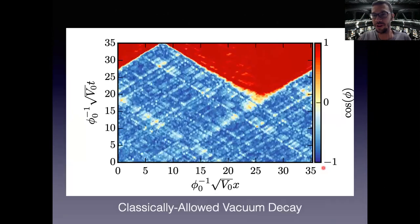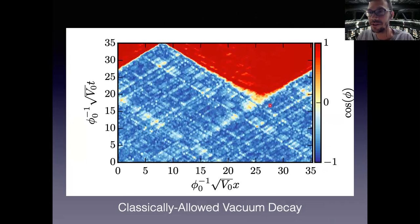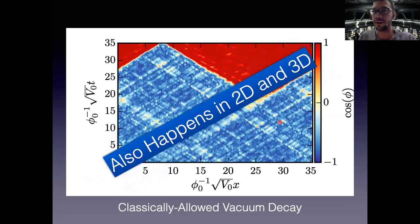In the simulation, blue represents field values near the false vacuum and red near the true vacuum. As time evolves, the field fluctuates around the false vacuum and then — bang — a bubble pops into existence. This is a purely classical time evolution showing that the false vacuum can decay, which is already a novel result for something thought to be purely a tunneling process.